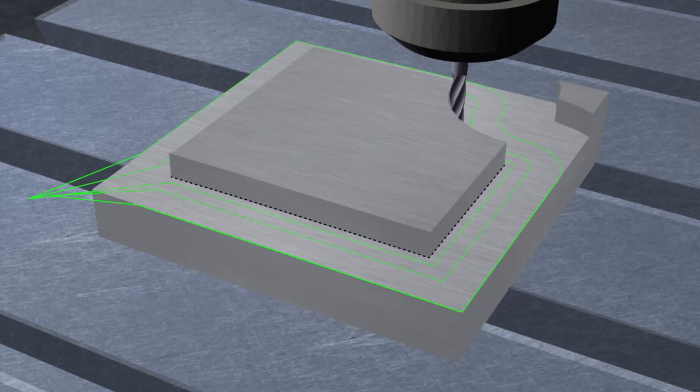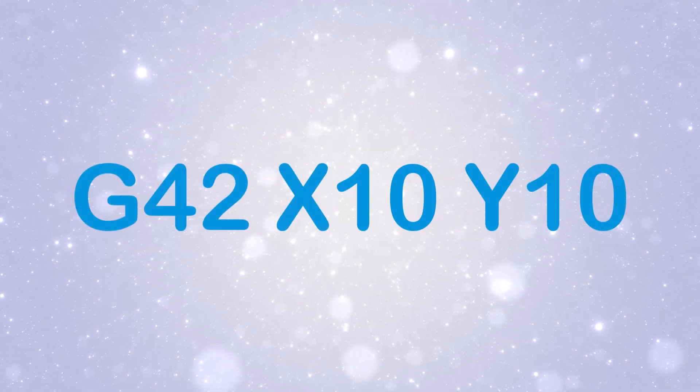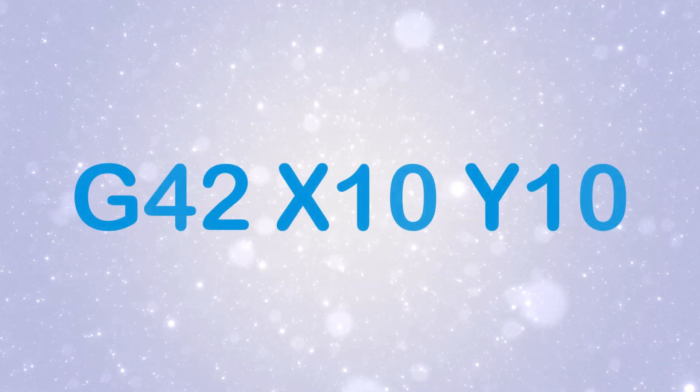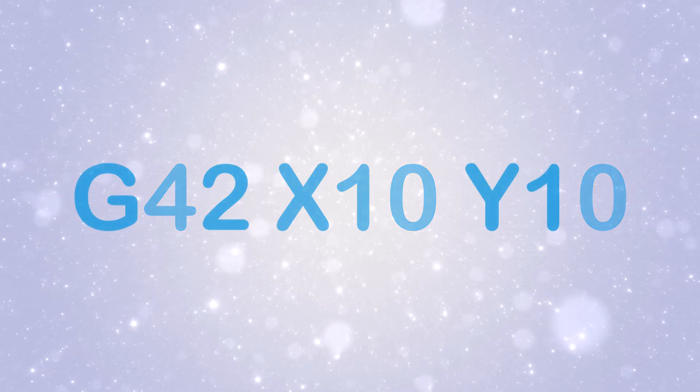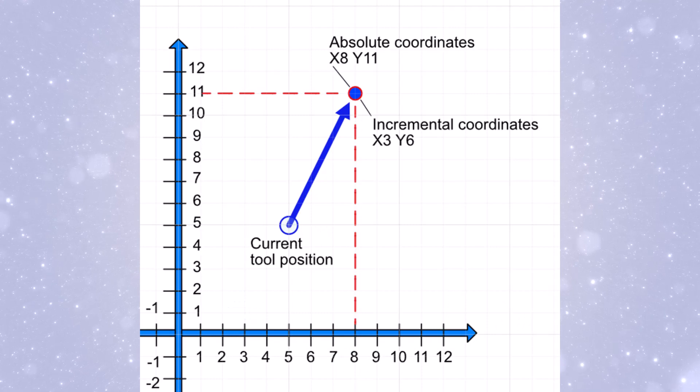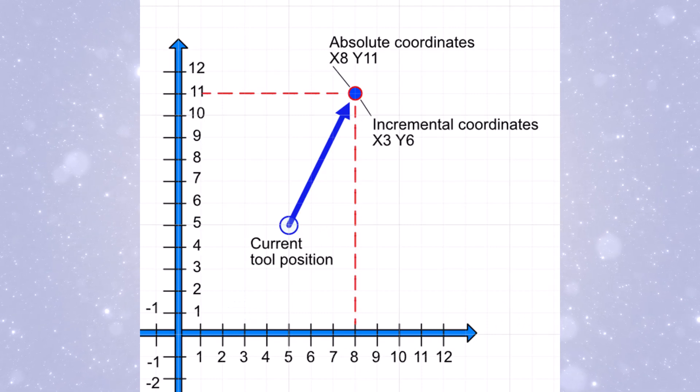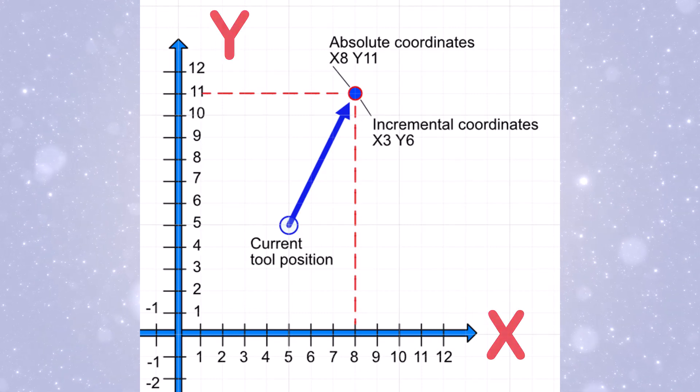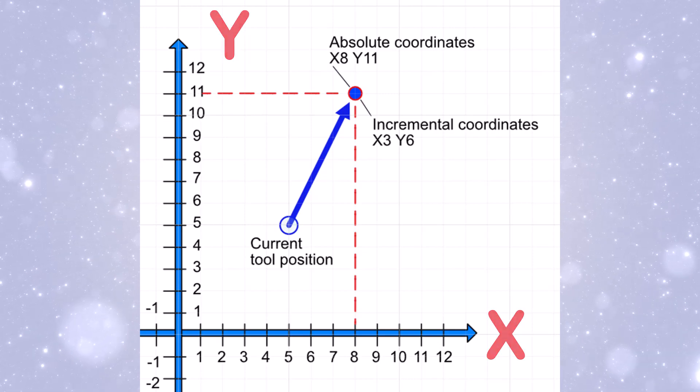For example, G42 X10 Y10 would start cutter compensation to the right and move the tool to coordinates X10, Y10. Remember, cutter compensation only shifts the location of the tool along the X and Y axes. It doesn't affect the Z-axis or depth of cut.